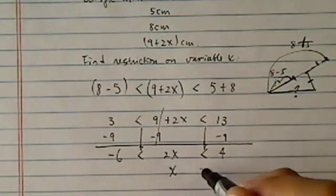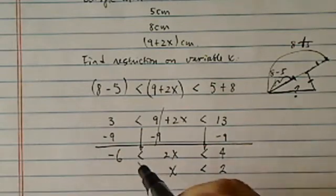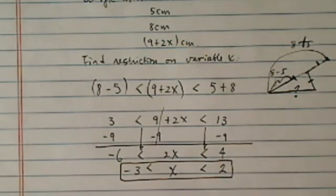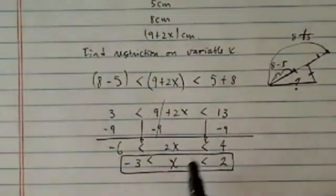Since I'm dividing by a positive number, this becomes a 2 because 4 divided by 2, here becomes a negative 3. So here's my restriction for the variable x.